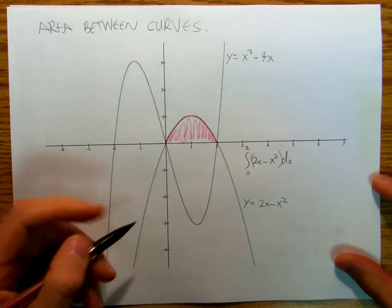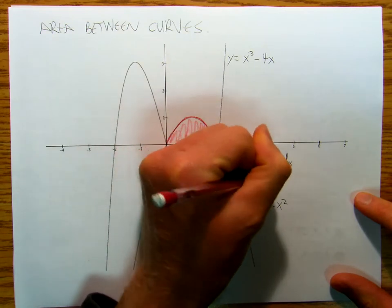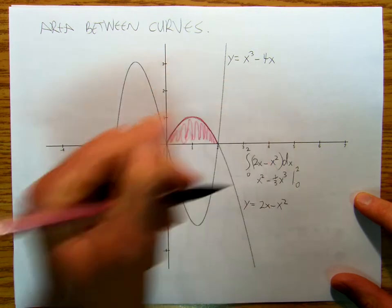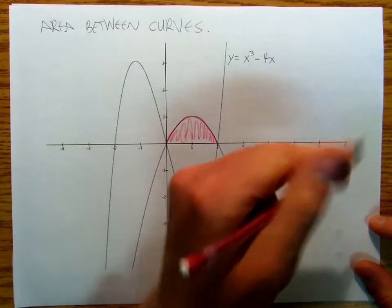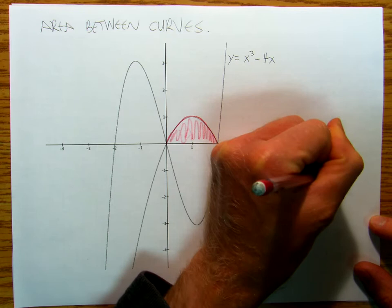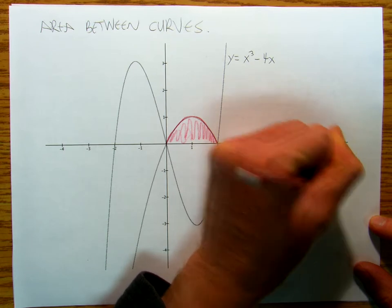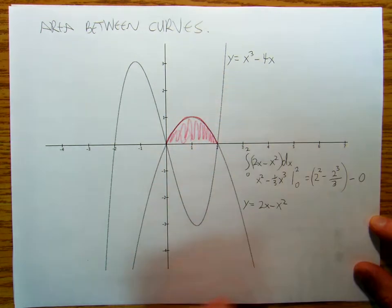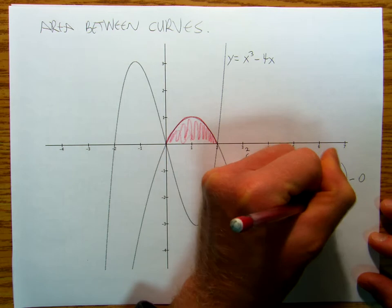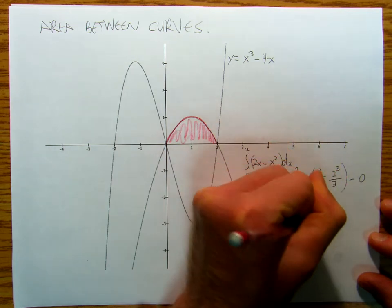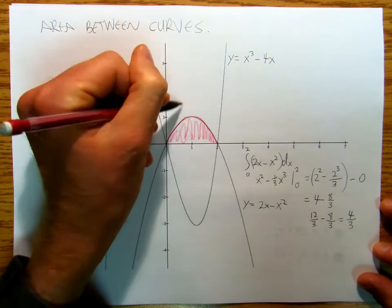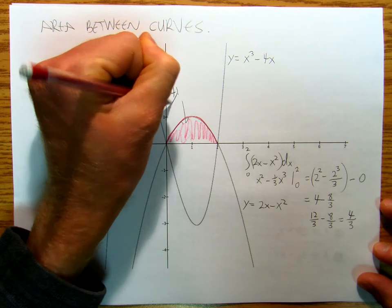I might as well just do that right now. So that's going to be x squared minus one third x cubed, and I'm going to evaluate that at two and zero. If I evaluate it at zero I get nothing; at two I get two squared minus two cubed divided by three, minus zero. I've got four minus eight thirds, so that's twelve thirds minus eight thirds, which equals four thirds. So that area there is four thirds.